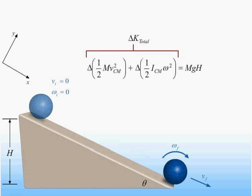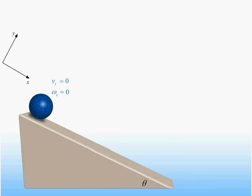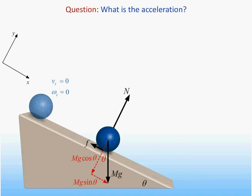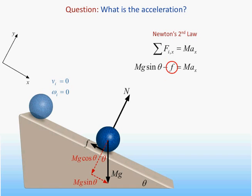On the last slide, we determined that the change in the kinetic energy of a ball rolling down a ramp was just equal to the work done by gravity. We would now like to determine the speed of the ball at any arbitrary time — in other words, we would like to calculate the acceleration of the ball. We will start by drawing the free body diagram and writing down Newton's second law that determines the motion of the center of mass, but we don't know the magnitude of the frictional force.